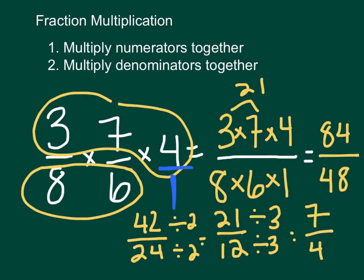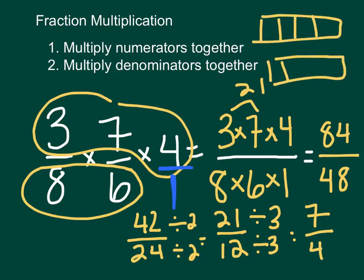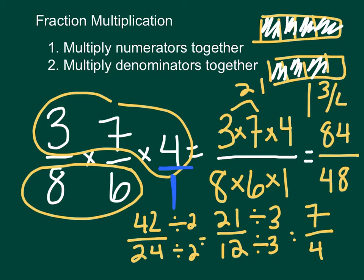Seven-fourths — remember, if we look at this, we have two sets of four pieces. Filling in seven of them: one, two, three, four, and then one, two, three — so this is the same as saying one and three-fourths. That's going to be our final answer.